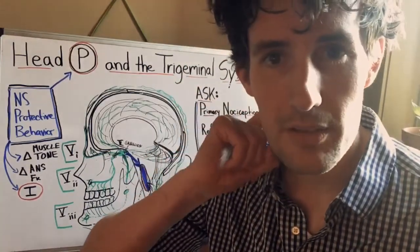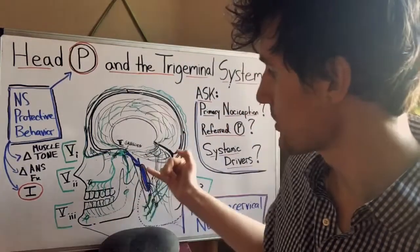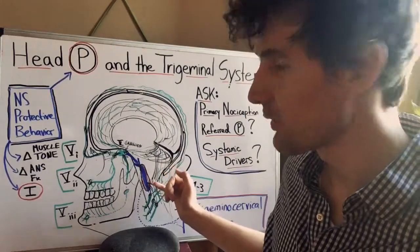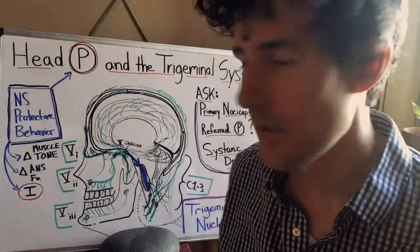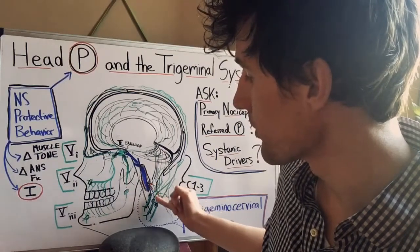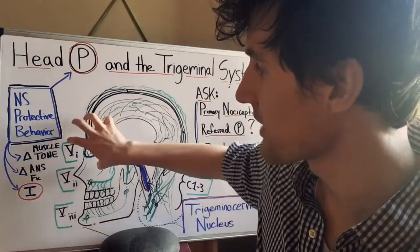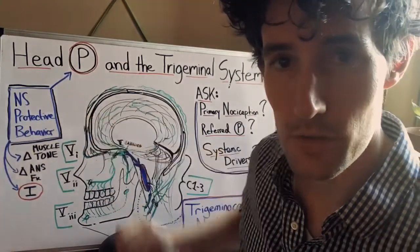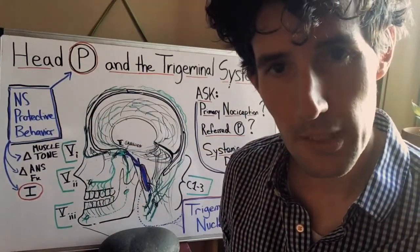That is not primary nociception. That is an erroneous guess by the trigeminal cervical nucleus as to where the threat is. So it's getting an abundance of irritative input from the neck and it's projecting that discomfort into another region of the head. That's referred pain.